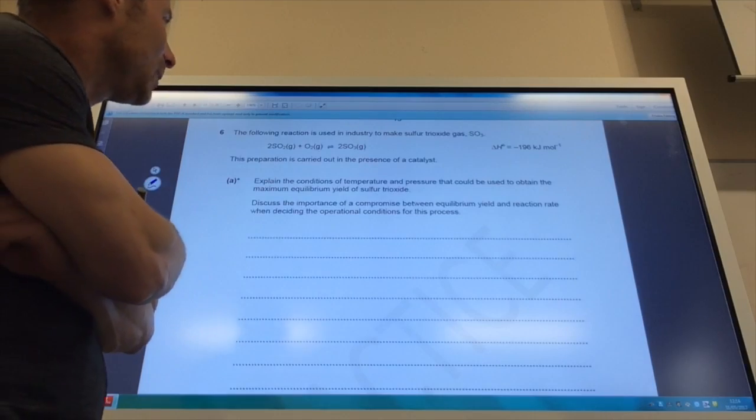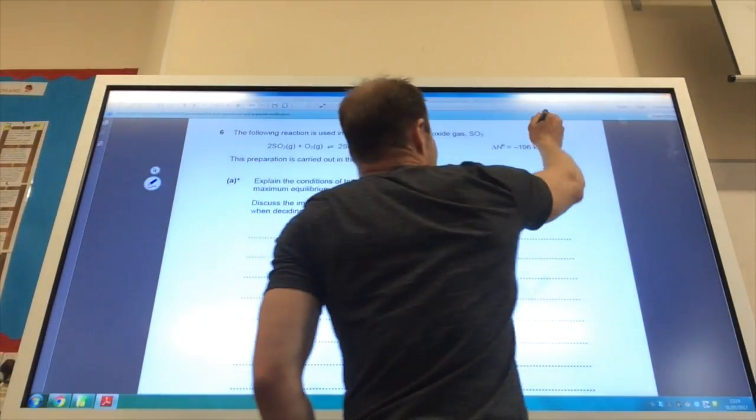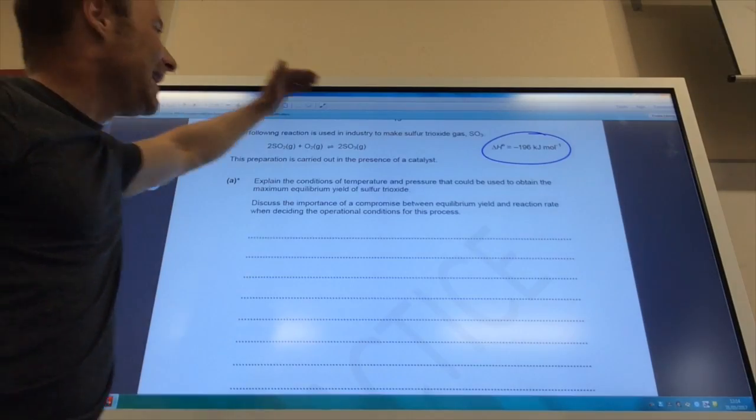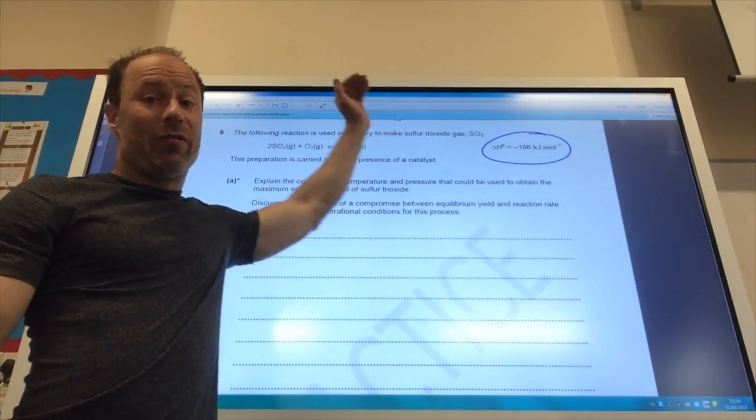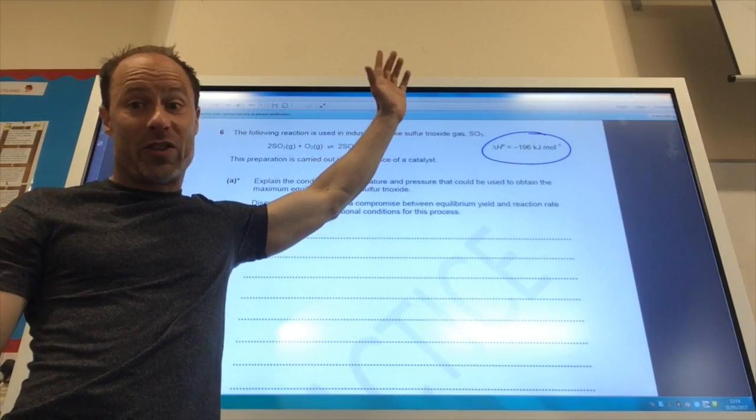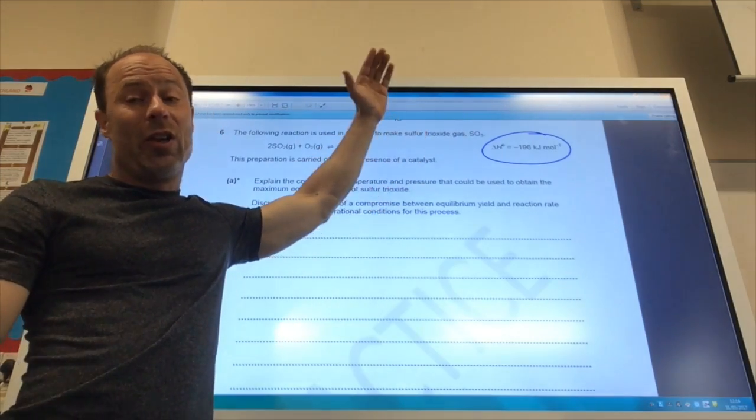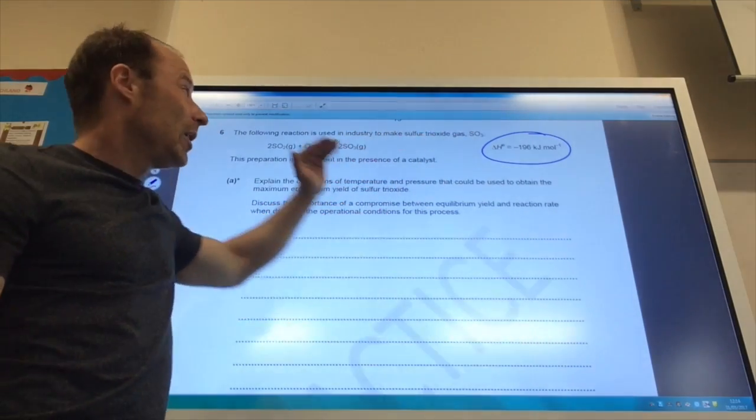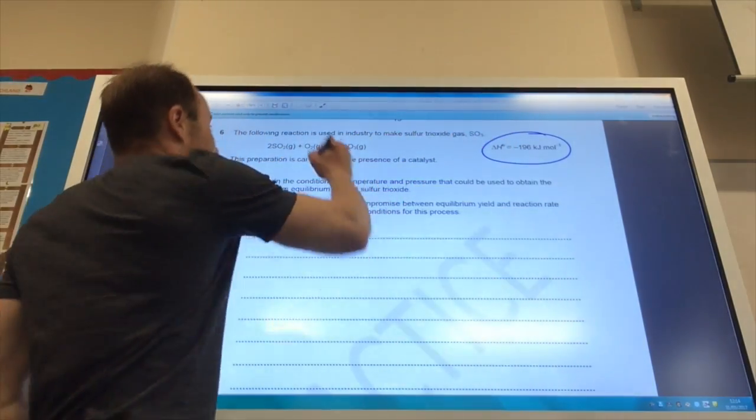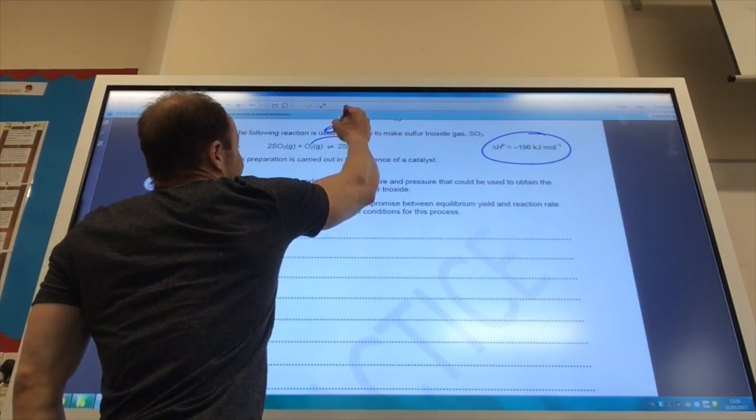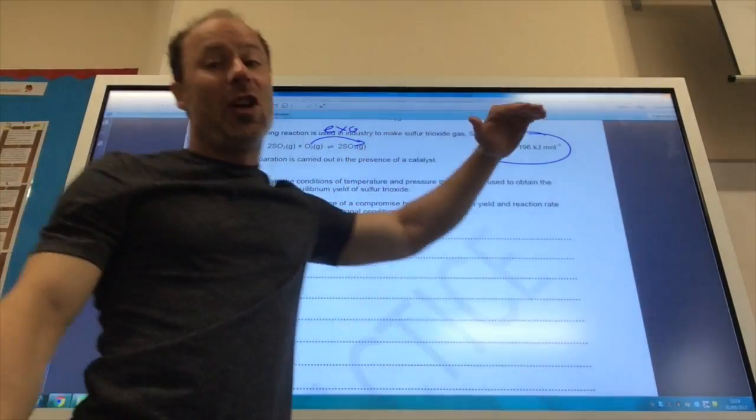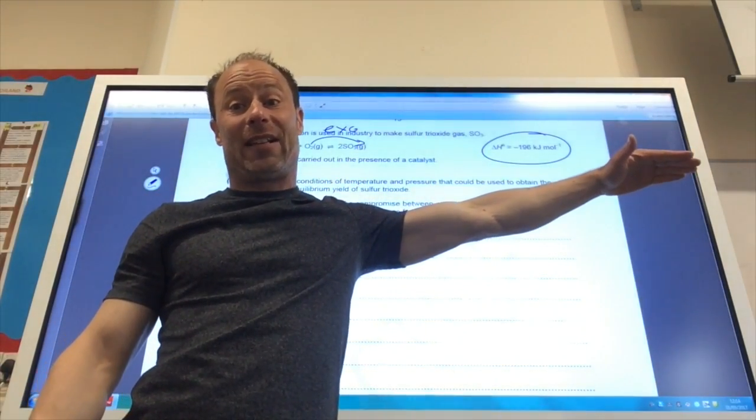First of all, let's deal with temperature. It is an exothermic reaction, and therefore if you increase the temperature, the reaction will go in the reverse direction. So to optimize yield for temperature, you'd use a low temperature because then that would push the reaction in the exothermic direction. Remember that forward reaction is exothermic, so low temperature, reaction goes in the exothermic direction.